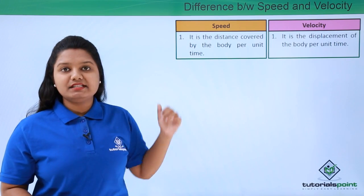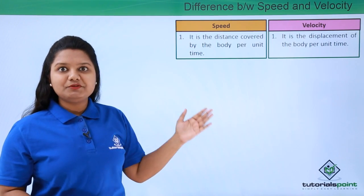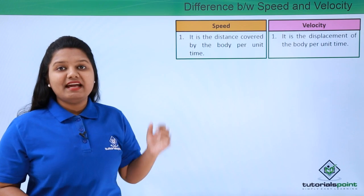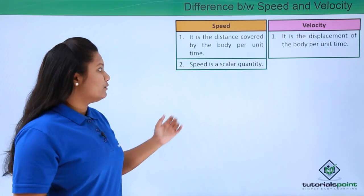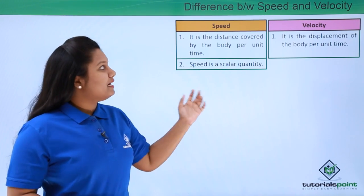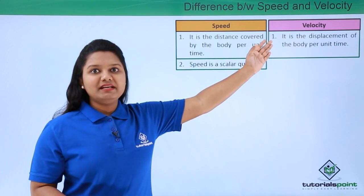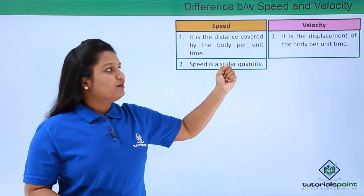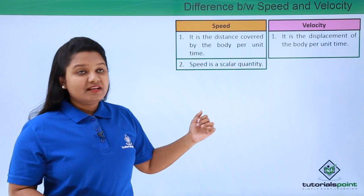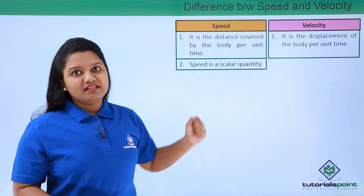Distance is a scalar quantity, and time is also a scalar quantity. Speed is a relationship between these two scalar quantities, and thus speed is also a scalar quantity. But velocity depends upon displacement, which is a vector quantity.